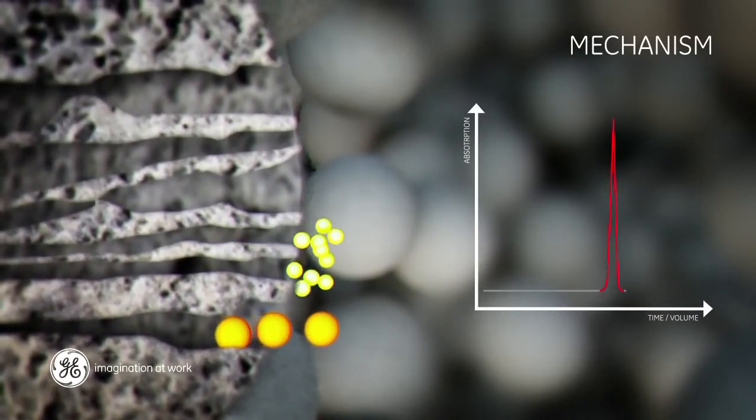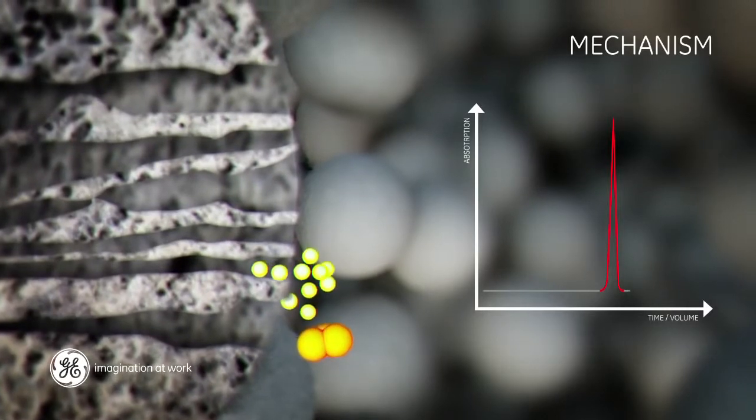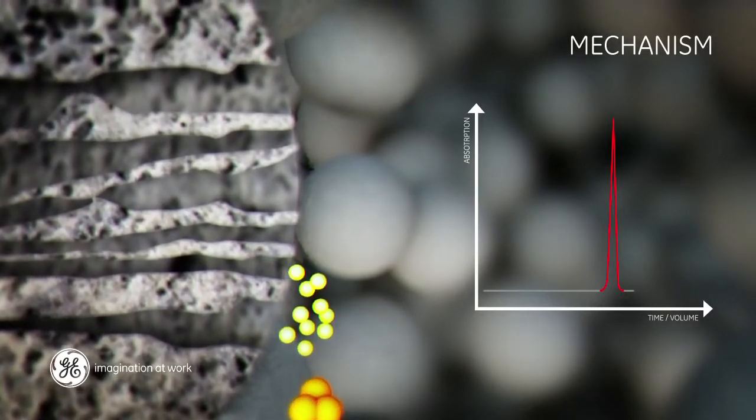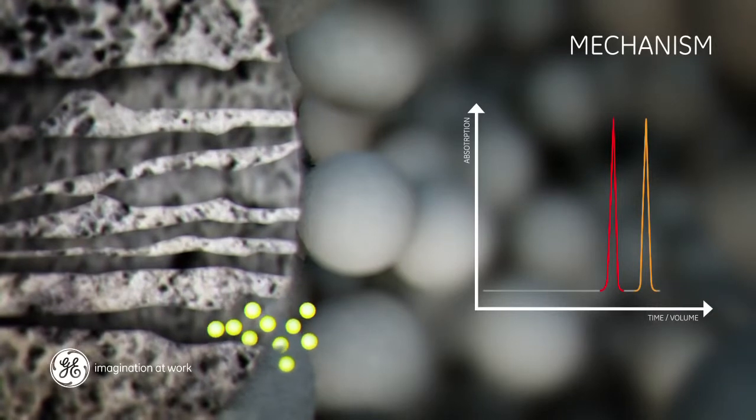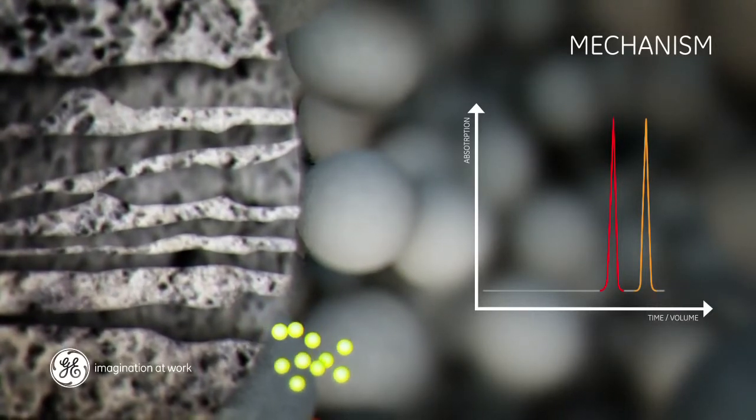Access to the pores is limited by steric hindrance. If a molecule is smaller than the smallest of the pores in the gel, it will be able to enter the total pore volume.